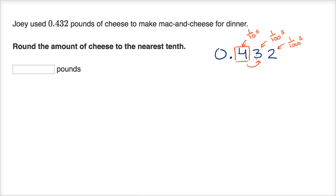Because three is less than five, we are going to round down. And we're going to get 0.400, or we could write that as 0.4, or we could write that as 4 tenths of a pound. Let's do another one.